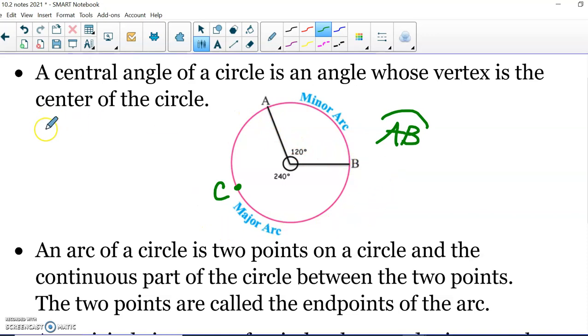If I wanted you to go the long way around, I would have to say start at A, go through C, and stop when you get to B. And again, you put the arc above it, you would read that arc ACB.